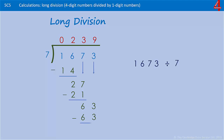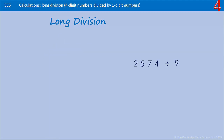We're left with zero, so our answer — 1673 divided by seven — is 239. I hope it's starting to make a bit more sense. Have a go at this one and see how you get on.